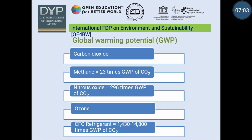Now we are going to see global warming potential. What is global warming potential? It is a measure of how much heat a greenhouse gas traps in the atmosphere up to a specific time horizon relative to carbon dioxide. The global warming potential of carbon dioxide is 1. Methane has a GWP of 23, meaning it is 23 times that of carbon dioxide. Nitrous oxide is 296 times that of carbon dioxide.